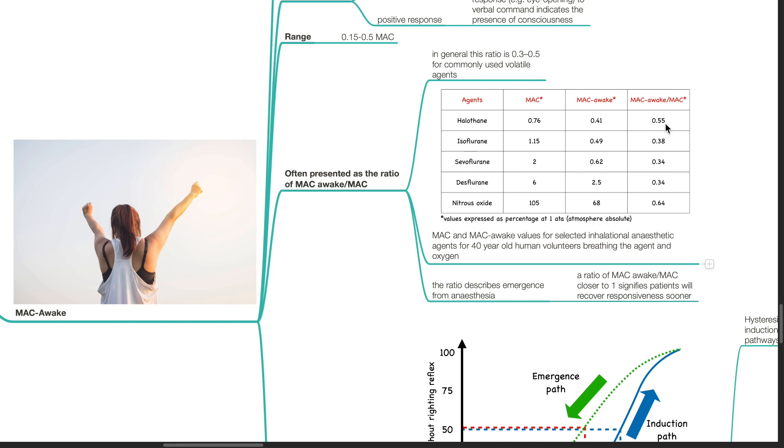For isoflurane, MAC is 1.15, MAC awake is 0.49 and MAC awake to MAC ratio is 0.38. For sevoflurane, MAC is 2, MAC awake is 0.62 and MAC awake to MAC ratio is 0.34.